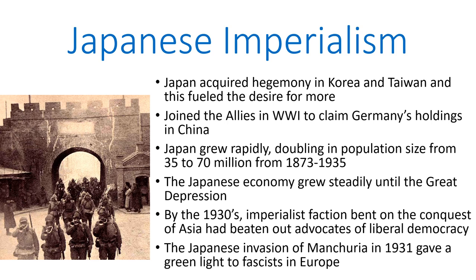Japan joined the Allied powers in World War I largely in order to claim Germany's holdings in China — otherwise, what interest would Japan have had in a European war? This, of course, gave them some claim to being one of the victorious powers, and gave them their seat in the League of Nations. Japan grew in power and in population during this general period. Its population at least doubled between 1873 and 1935, and some estimates even say that it may have tripled. The Japanese economy also grew steadily until the Great Depression, when Japan's economy slowed down considerably.